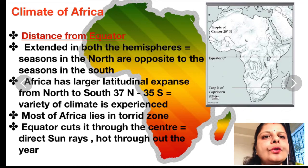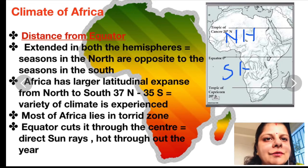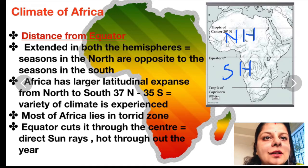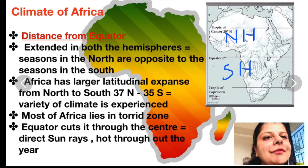Since Africa is located on both sides of the equator, seasons in the northern part of the African continent are completely opposite to the seasons in the southern part. For example, if the northern part of Africa is experiencing winter in December, then December will be a summer month in the southern part of Africa.